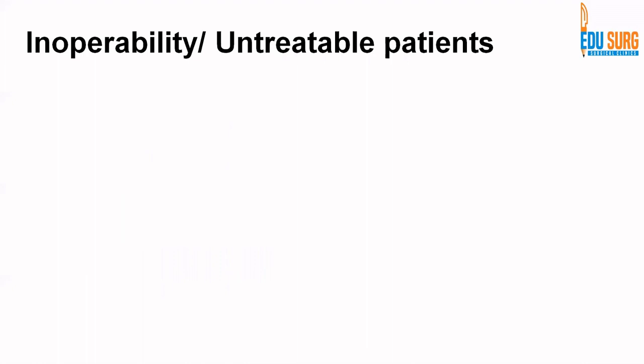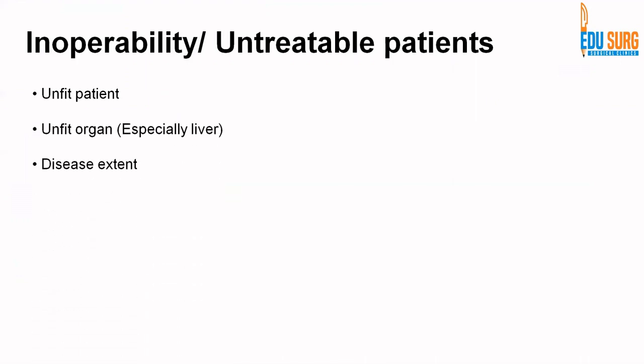The first point: what is inoperable or untreatable? We must remember the disease is in an organ, and that organ is inside a patient — a three-tier system. An untreatable or inoperable patient can have disease extent beyond treatment (M1), an unfit organ affected by cancer directly or indirectly, or an unfit patient due to comorbidities such as very low ejection fraction, severe kidney disease, chronic liver disease, or acute-on-chronic liver dysfunction — commonly seen in biliary cancer patients.